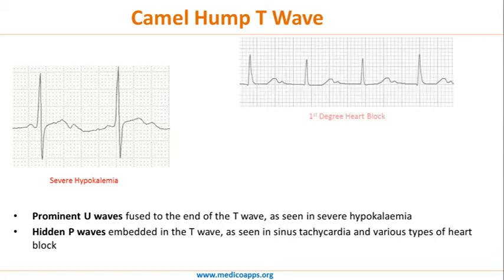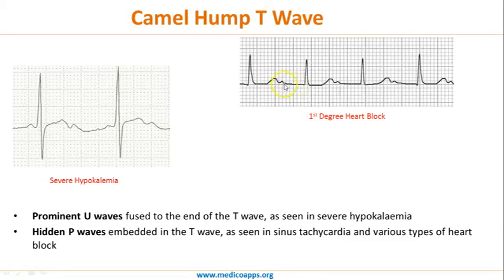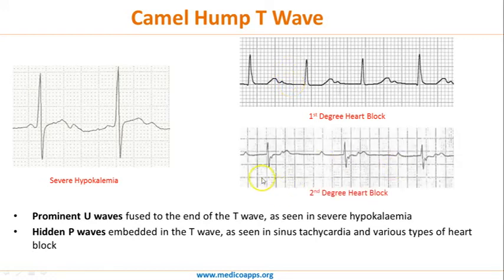A camel hump appearance can also be caused by hidden P waves embedded in the T wave, as seen in various types of heart block. In first-degree heart block, the P wave is fused with the T wave to give a camel hump appearance — all P waves are conducted to QRS complexes, but the P wave is fused with the T wave. In second-degree heart block, a 2:1 block ratio may be present, with the P wave superimposed on the T wave again giving a camel hump T wave appearance.